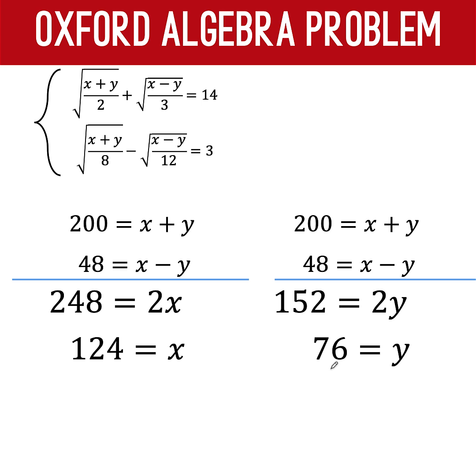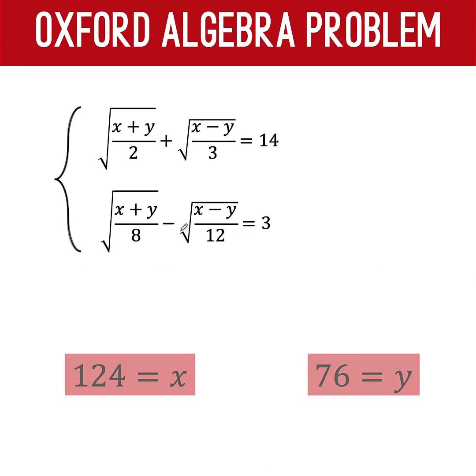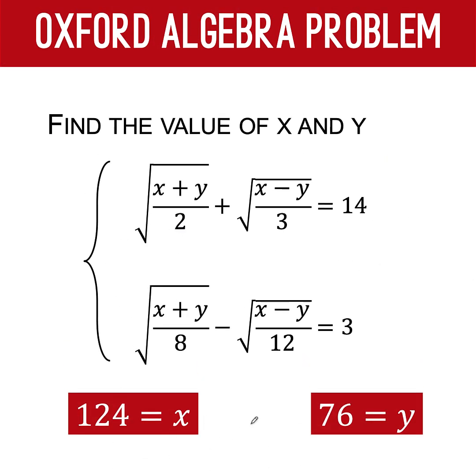To check if our answer is correct, let's substitute 124 for x, 76 for y. And using Desmos graphing calculator, it's verified that the first equation is indeed equal to 14 when these values for x and y are substituted to the given equation. Similarly, we verified that the second equation is indeed correct. The difference of these two radical expressions is 3 when x is 124 and y is 76. And so, we are now confident that our final answer, x equals 124 and y equals 76, are the solutions to this system of radical equations.